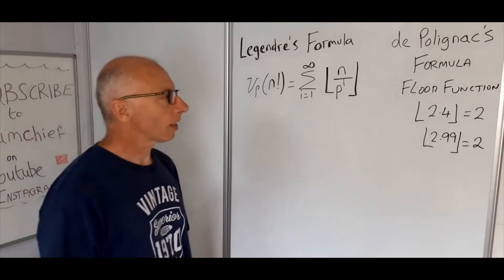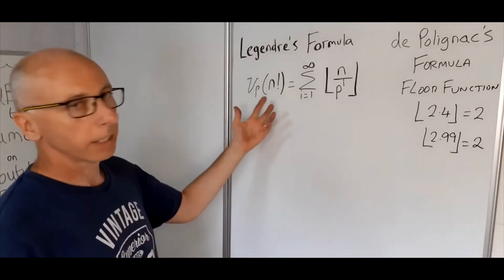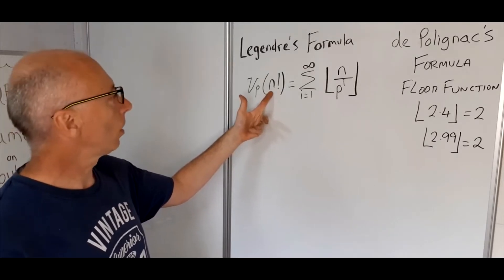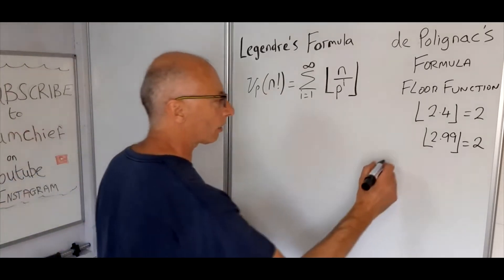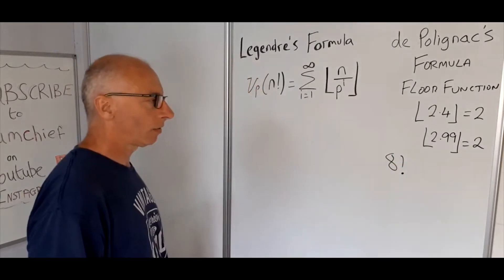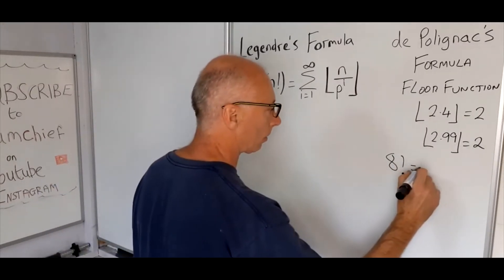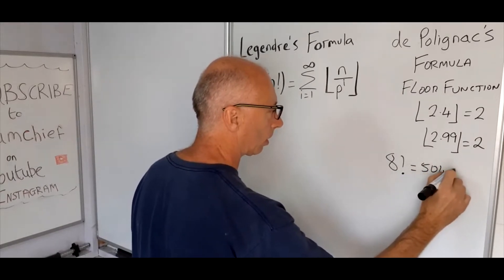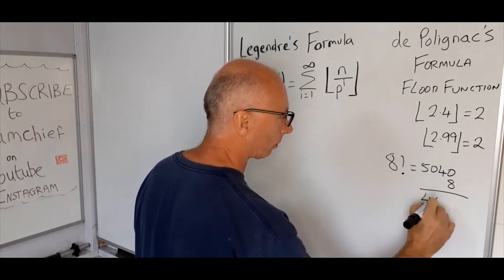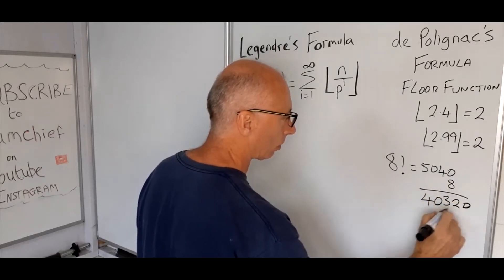Okay, so let's pick a number for n. Let's try for 8. So 8 factorial is, well 7 factorial is 5040, so if we times that by 8 we get 40,320.